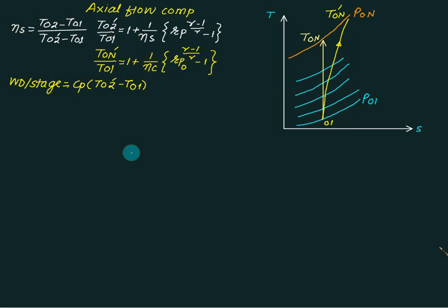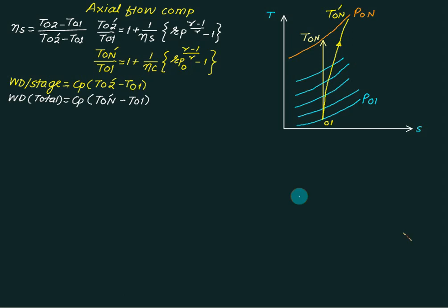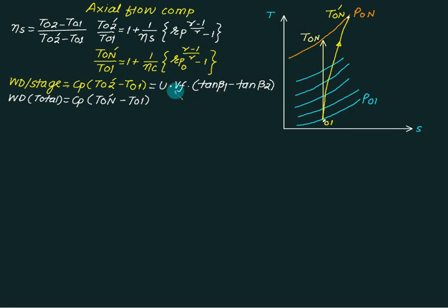The work done per stage is given by cp multiplied by (T02 dash minus T01), where T02 dash is the actual temperature at the end of the first stage and T01 is the stagnation temperature at inlet. For total work done across all stages, we take the overall temperature difference: cp multiplied by (T0n dash minus T01), in kilojoules per kg, where cp equals 1.005. Work done per stage is also given by U × Vf × (tan β1 minus tan β2).